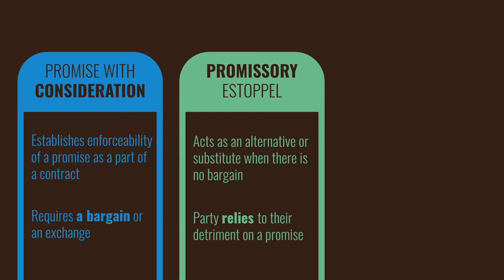We ran through the elements of promissory estoppel: there had to be a promise made by the promisor to the promisee with a reasonable expectation that the promisee would rely on it, and there was actual reliance on the promise. We use the but-for test — that but for the promise, the promisee would not have acted or refrained from acting in the way that they did. And justice requires the enforcement of the promise, meaning there's actually been a detriment or harm to the promisee.